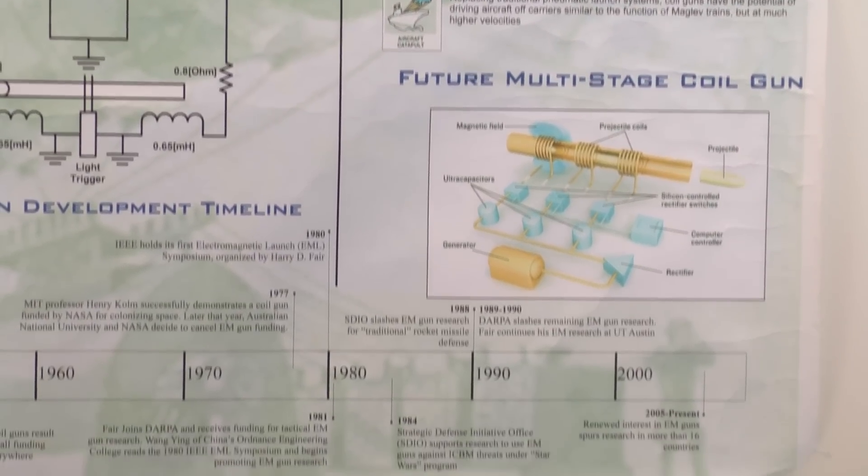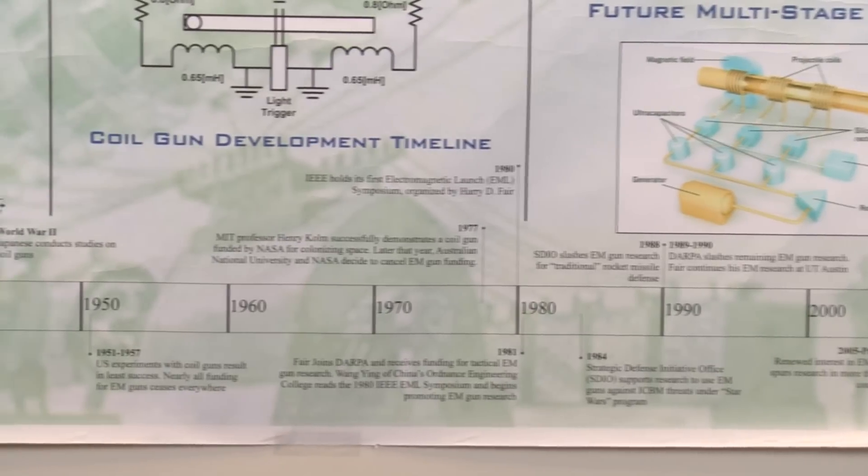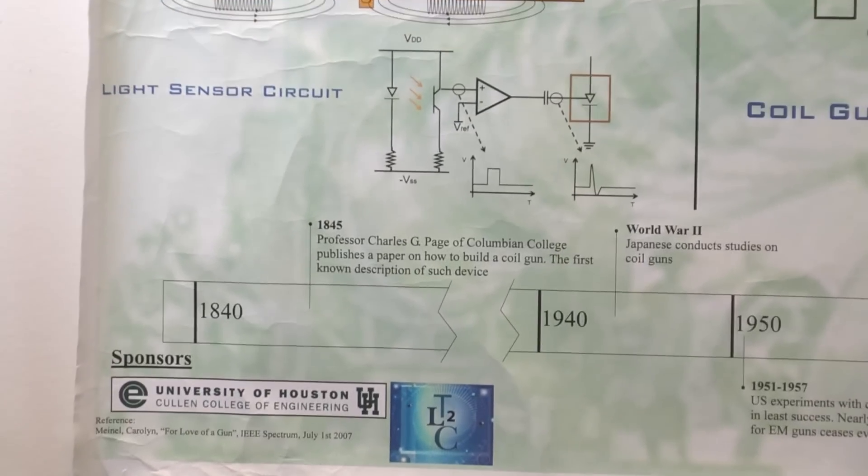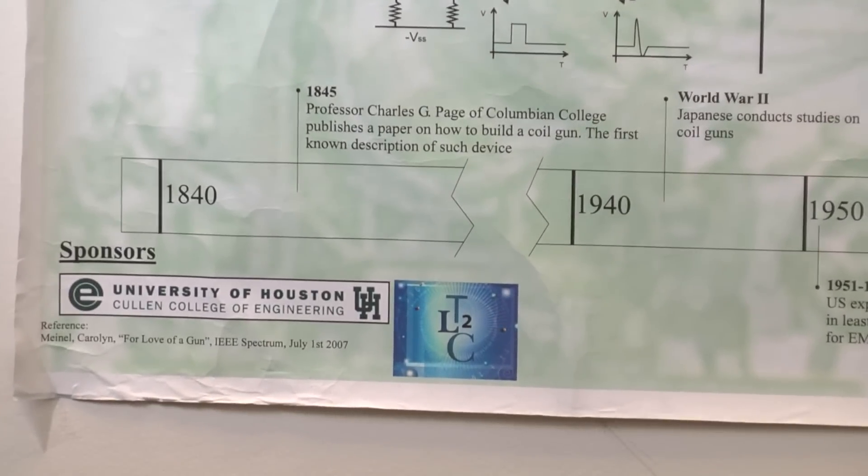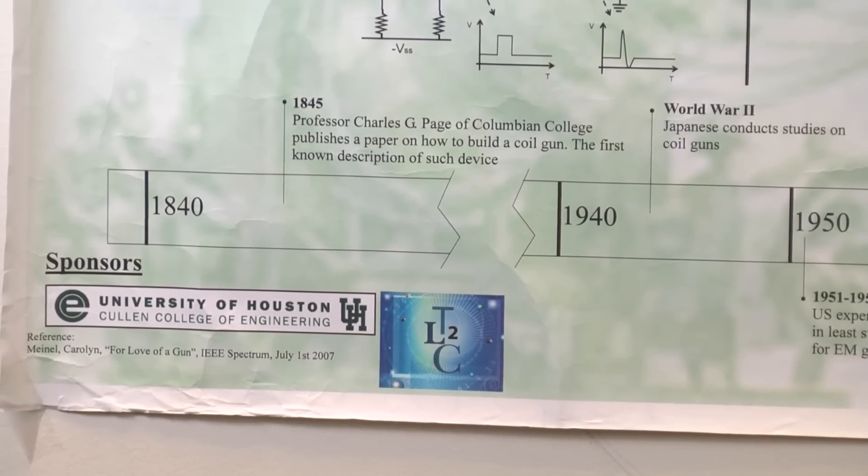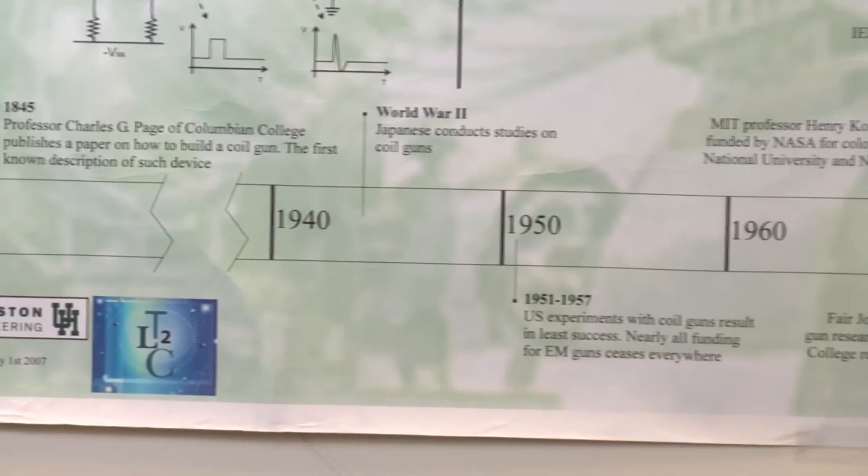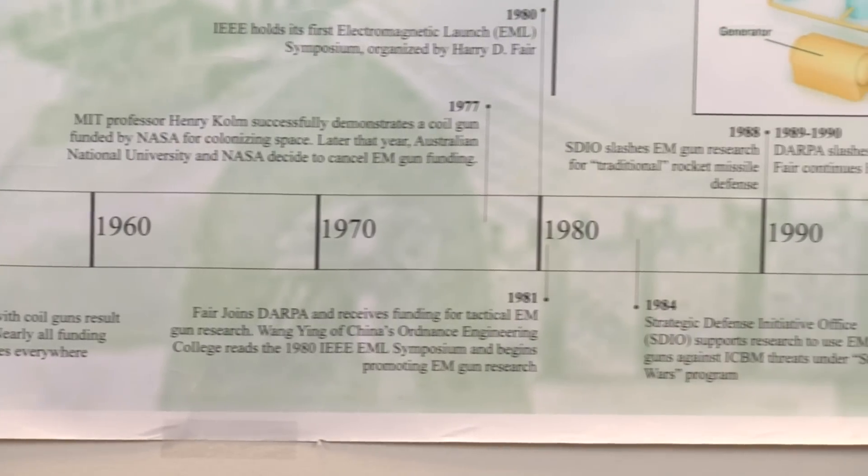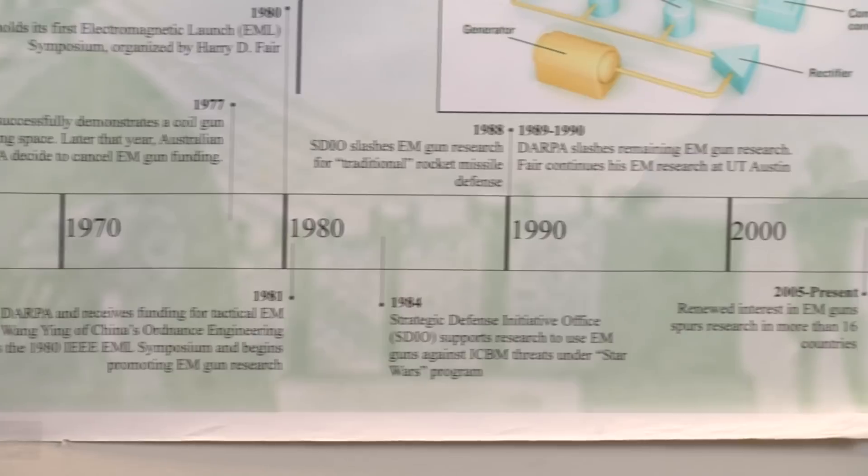And then we have some future stuff on the right, and on the bottom in this less desirable real estate we have a timeline with all the important dates. We do have the sponsors. They have the logos for the group that printed it as well as the university that they're working with.